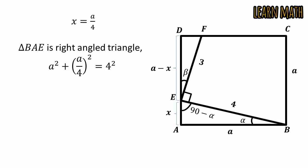Simplify this and we will get 16a squared plus a squared divided by 16 is equal to 16. Simplify again and we will get this.